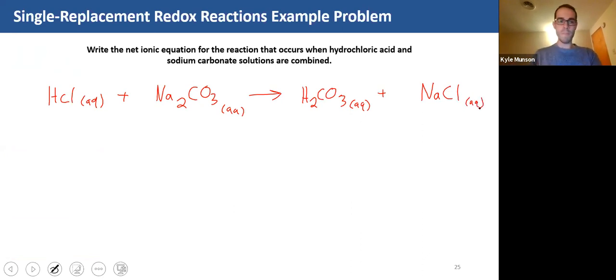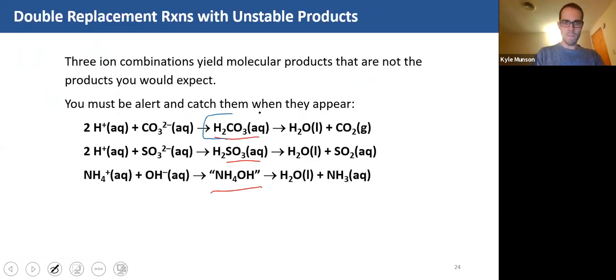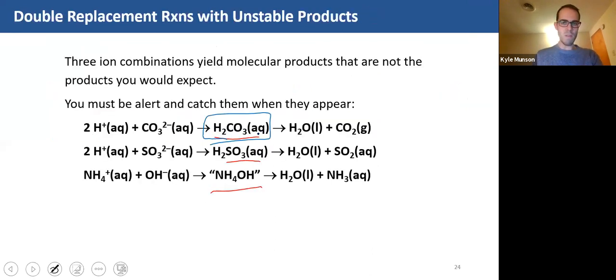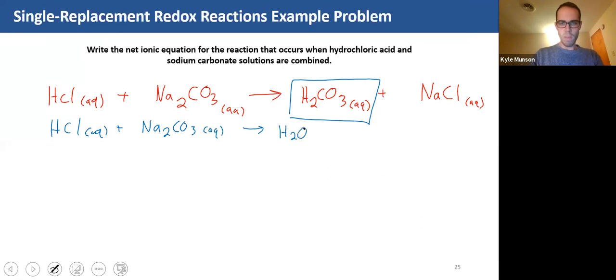Again, we're not gonna stop there because this guy is one of our unstable products. Right here, so we're gonna continue to write this out. So hydrochloric acid aqueous plus sodium carbonate gives me, and what is this gonna break it down into? Water and CO2. So H2O liquid plus CO2 gas plus sodium chloride aqueous. So this is our conventional equation.